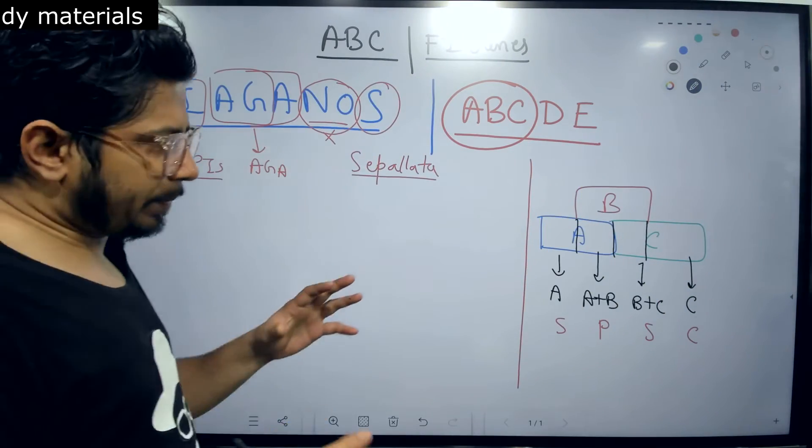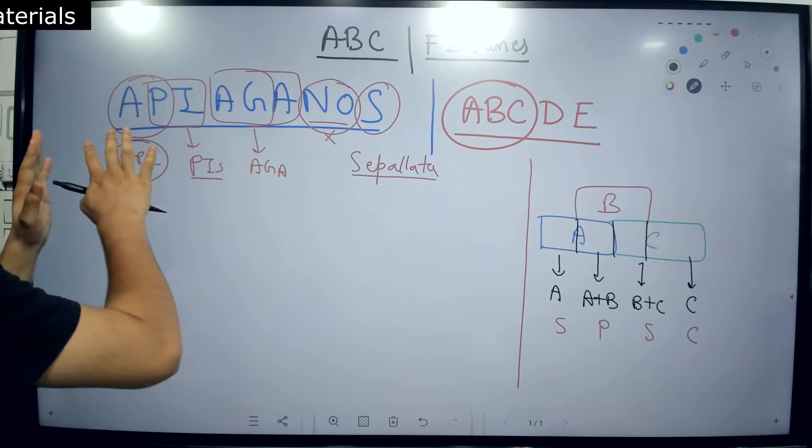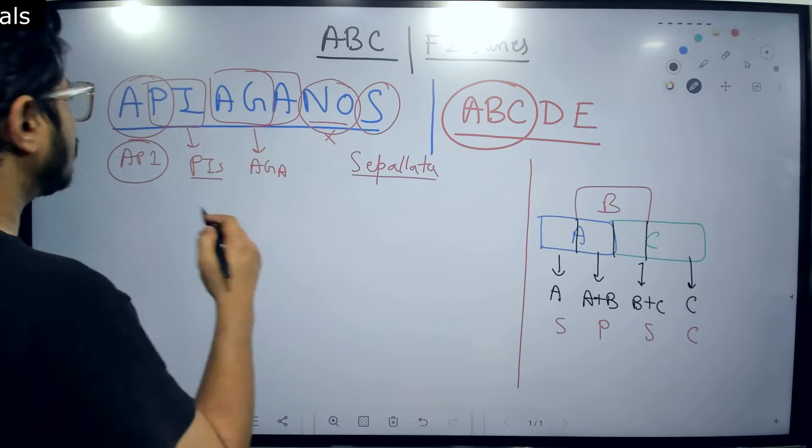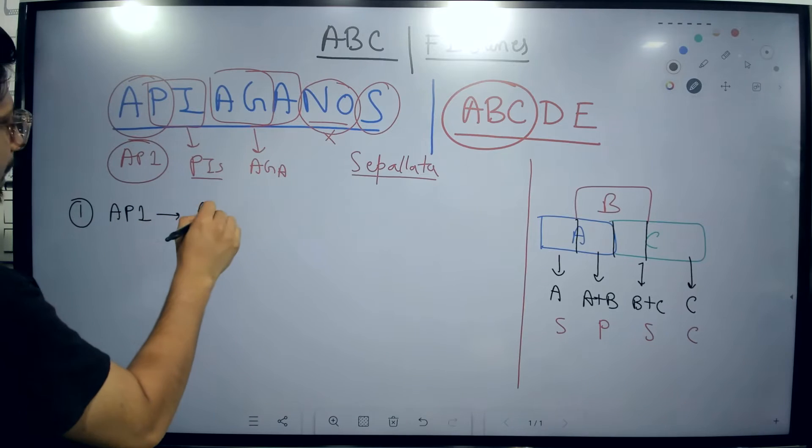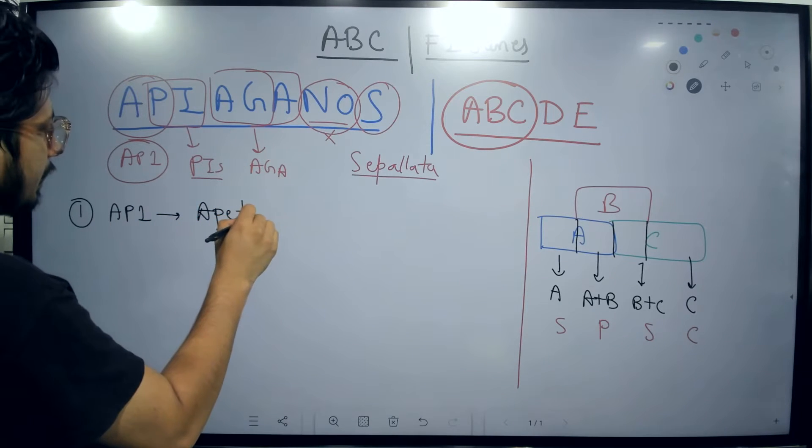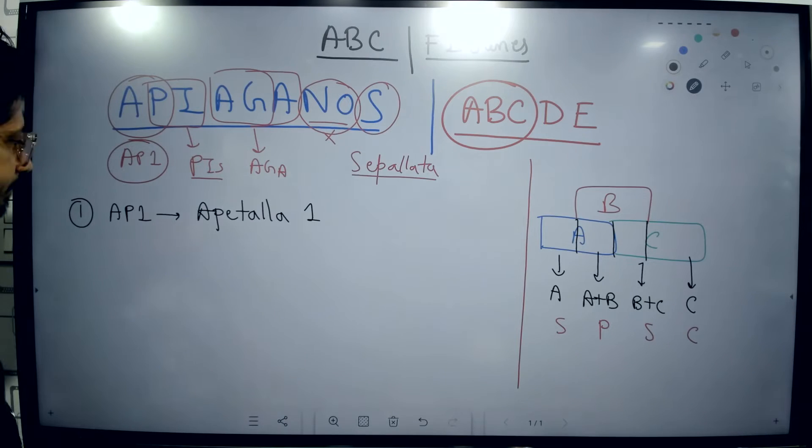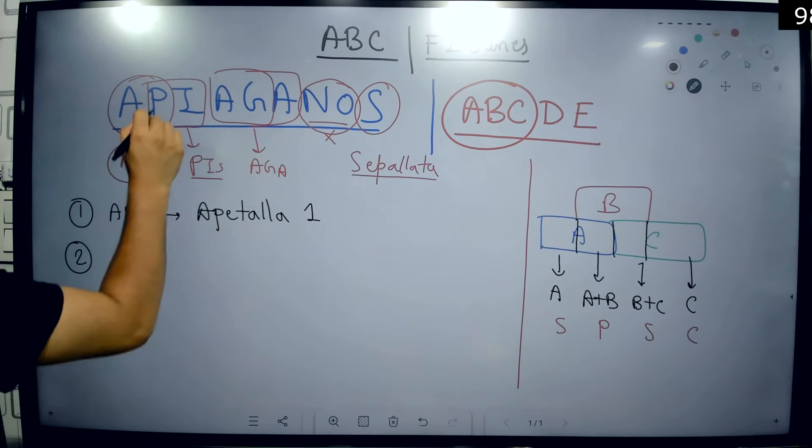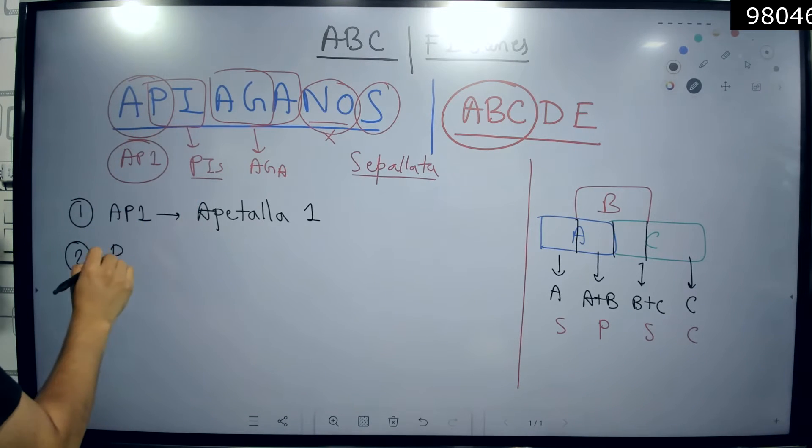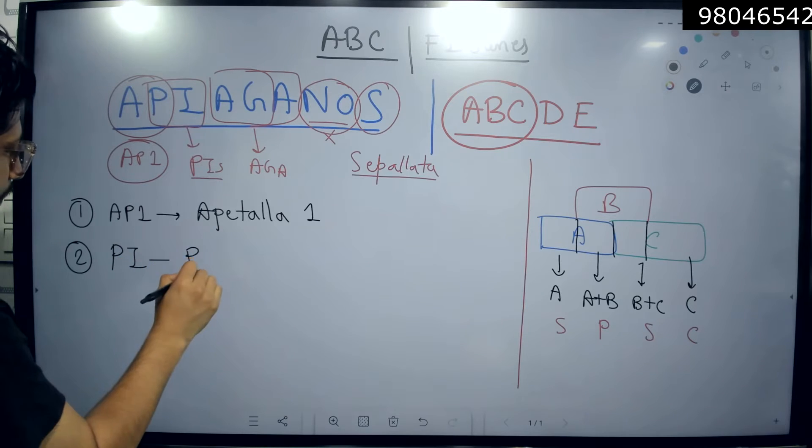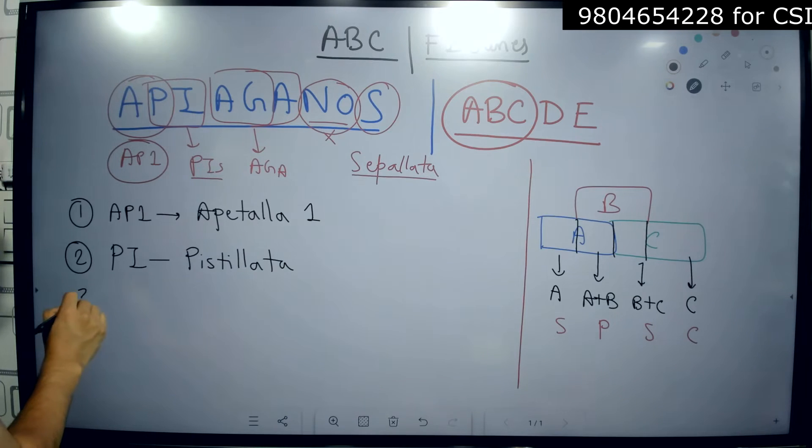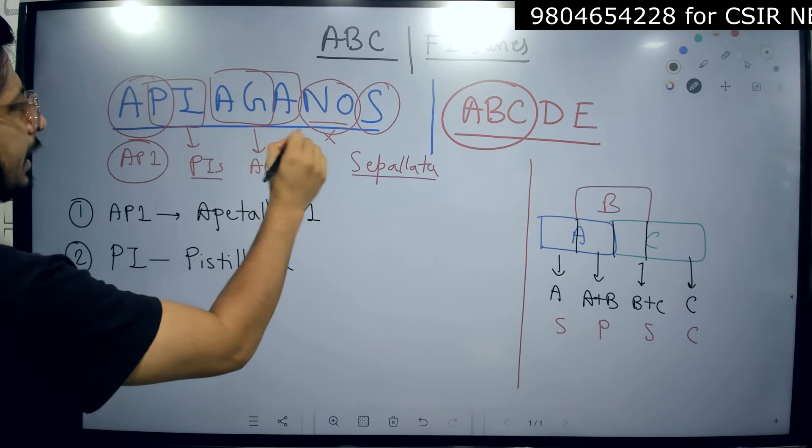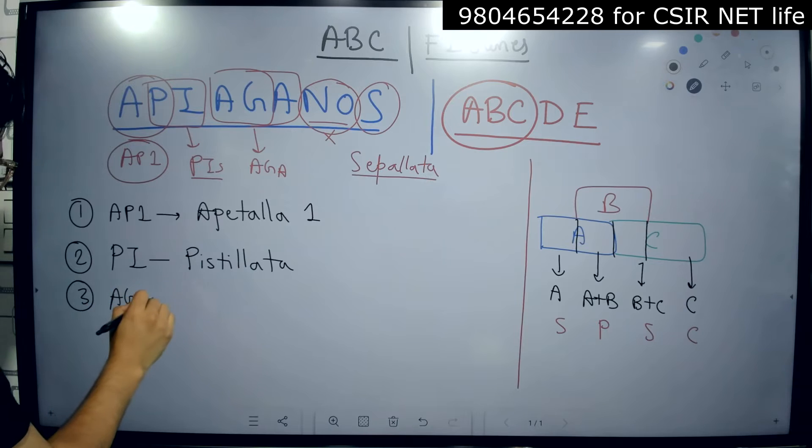You know the ABC model of flowering. I already told you the name of the genes arbitrarily. Now I'm going to tell you the name of the genes in details starting with the first one. AP1, the full form of this gene is Apetala 1. The second gene that is out there is PI, PI for Pistillata.